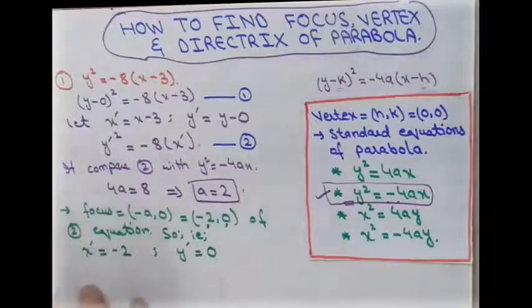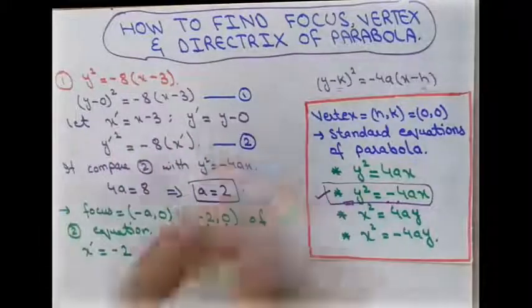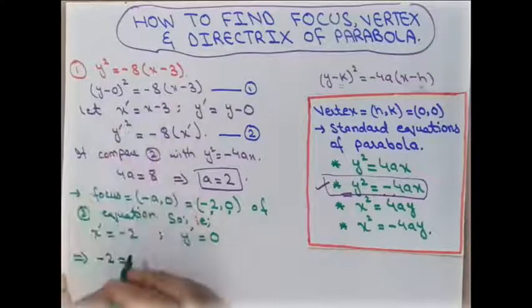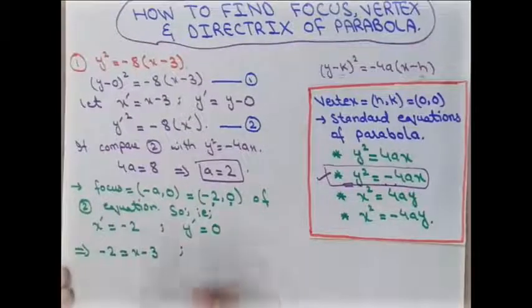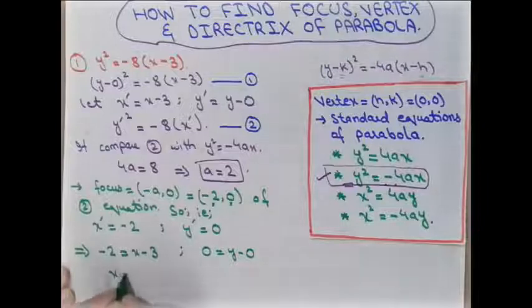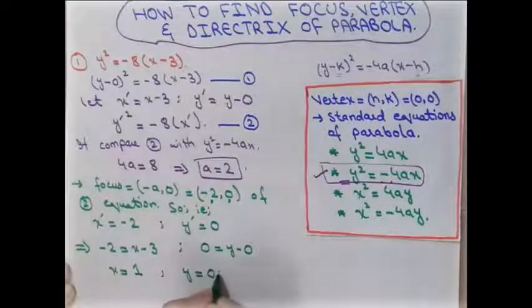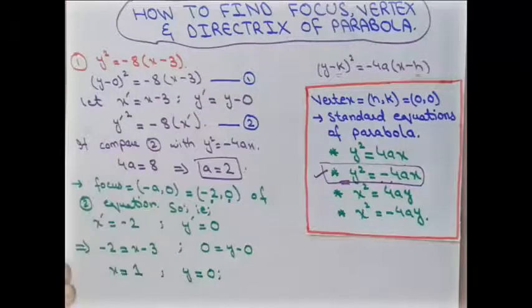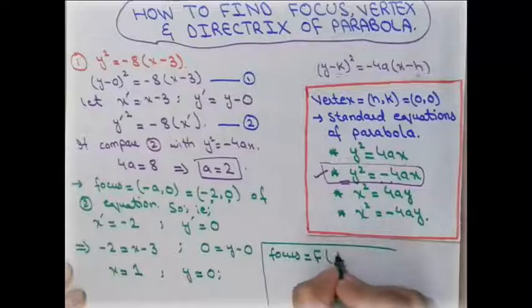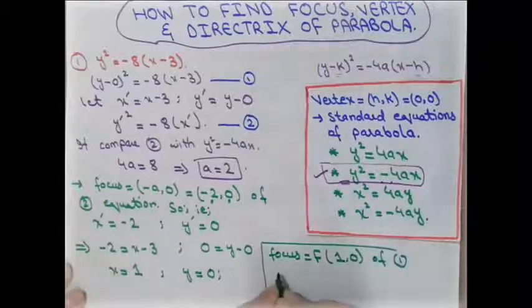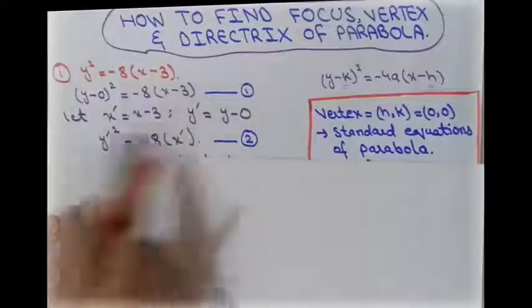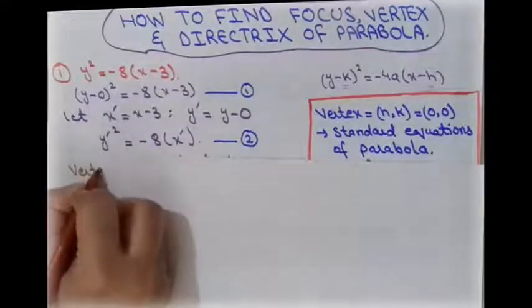To find the focus of the first equation, we substitute back. We have x′ = −2, so −2 = x − 3, giving x = 1. And y′ = 0, so 0 = y − 0, giving y = 0. Therefore the focus of the first equation is (1, 0).